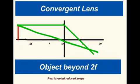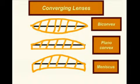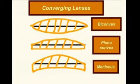A camera uses this arrangement. A converging lens may be biconvex, planoconvex or meniscal.